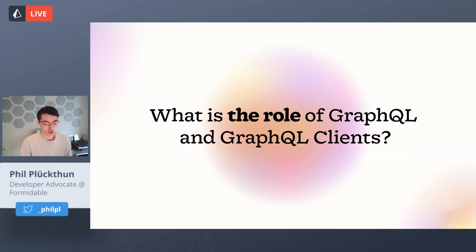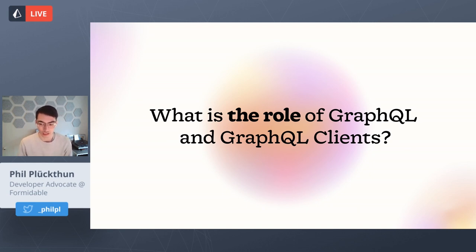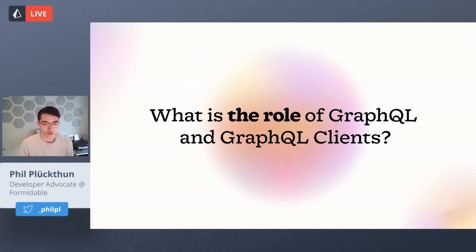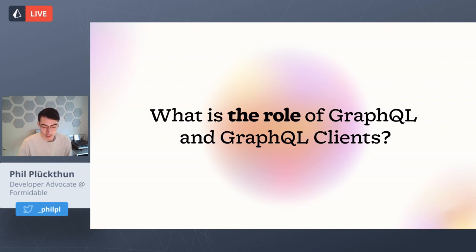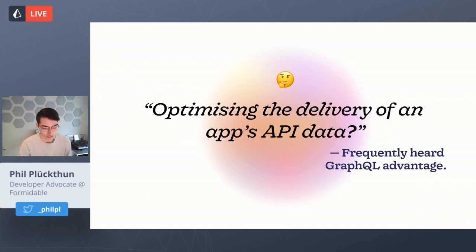When we built this GraphQL client, we started from a very simple fetcher — similar to GraphQL Request. All we did was send a request to a GraphQL API, get a result, and render it out. So what is the role of GraphQL and GraphQL clients if we start from scratch? If you search 'why use GraphQL,' you come up with a bunch of common answers.